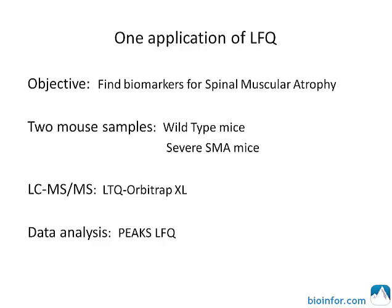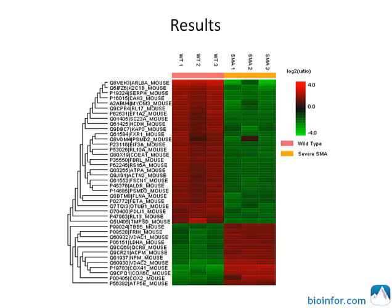Two mouse samples were prepared: wild type and severe. The data was analyzed using PEAKS label-free quantification. Label-free proteomic analysis reveals a list of more than 40 putative biomarkers of disease status in skeletal muscle from severe spinal muscular atrophy mice.